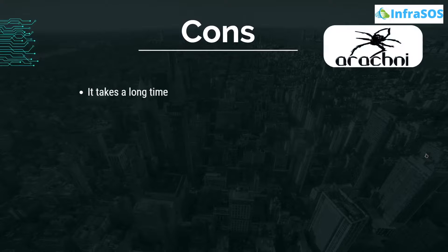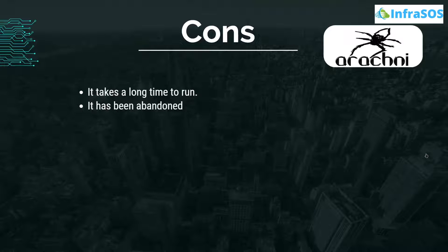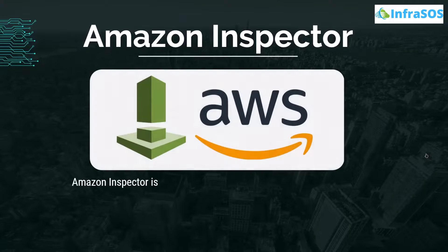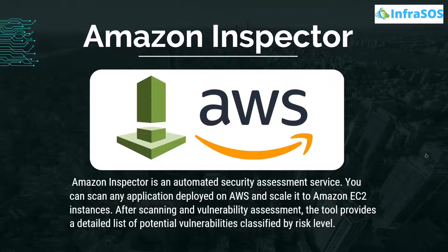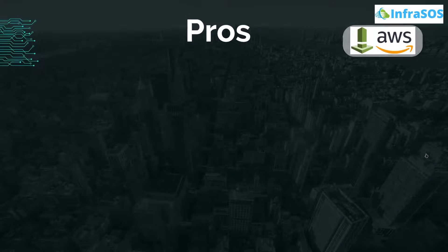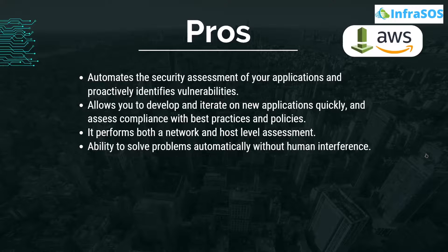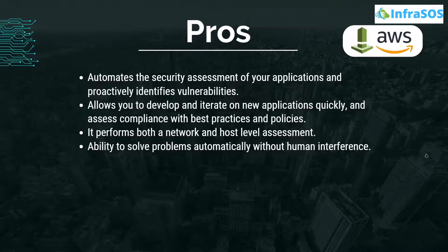Cons of Arachni include that it takes a long time to run and it has been abandoned. At number thirteen we have Amazon Inspector. Amazon Inspector is an automated security assessment service. You can scan any application deployed on Amazon and scale it to Amazon EC2 instances. After scanning and vulnerability assessment, the tool provides a detailed list of potential vulnerabilities classified by risk level. Pros include that it automates security assessment, proactively identifies vulnerabilities, allows you to develop and iterate new applications quickly, assesses compliance with best practices and policies, and performs both network and host-level assessments.